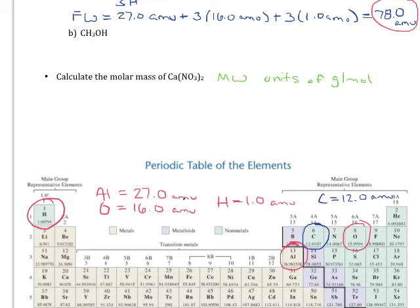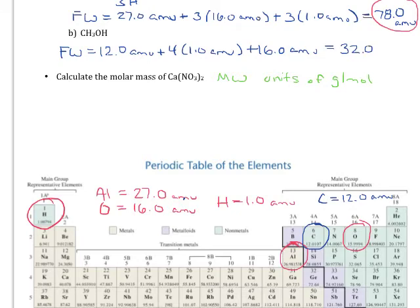So this formula weight is going to be equal to 12.0 atomic mass units for the carbon plus 4 times 1.0 atomic mass units for the hydrogen plus 16.0 atomic mass units for the oxygen. Again rounding to one decimal place gives us 32.0 atomic mass units.